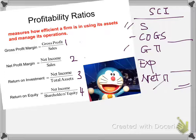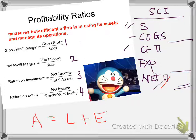So the first two ratios — one and two — you will compare the sales figure and the gross profit for gross profit margin, and for the second, net profit margin, you will be comparing sales and the net profit. Then the next two: return on investment and return on equity. You will be comparing your net income — for return on investment, compare net income with the total asset; for return on equity, compare net income with the equity.